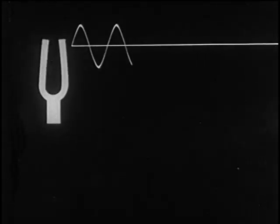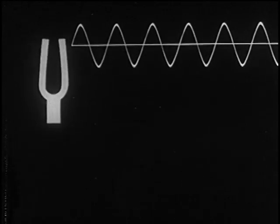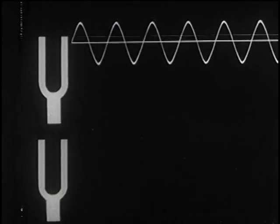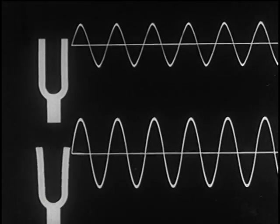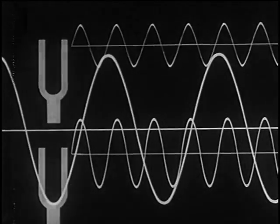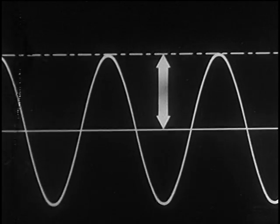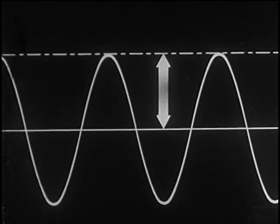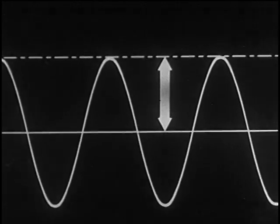We begin with loudness. Every sound sets up a disturbance in the transmitting medium. The larger the disturbance or displacement of the individual particles, the greater is the height of its graph above the neutral line. This displacement above the neutral line is called amplitude. And it is amplitude that determines loudness. As the amplitude increases, its loudness increases.